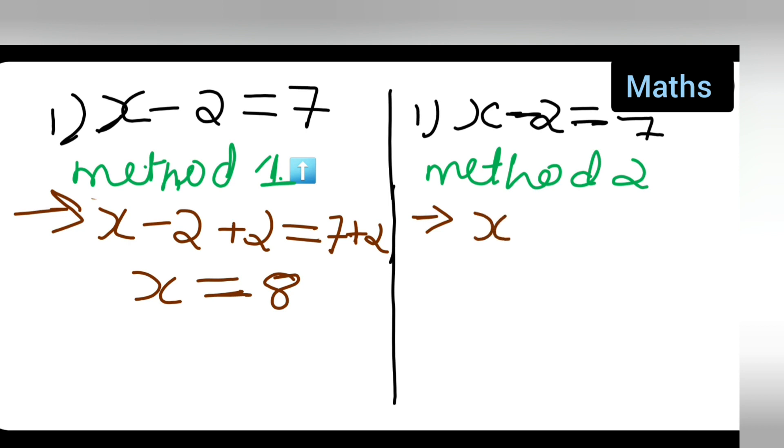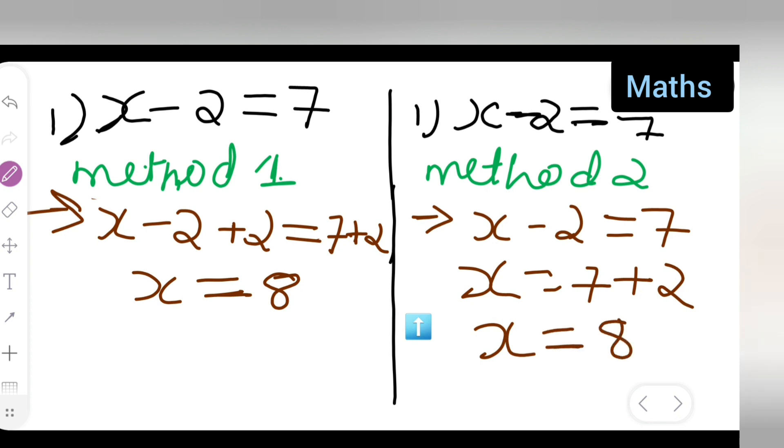So, here what you all have to do is x minus 2 is equal to 7 is given. Right. For you all. So, what you all have to do is x is equal to 7. Then this minus 2. This minus 2 you all have to take it other side. So, it will be plus 2. So, 7 plus 2 will give you x is equal to 8. In both the methods you all are getting 8.